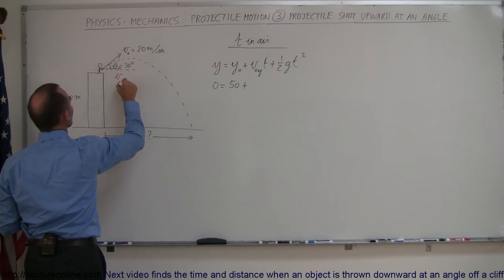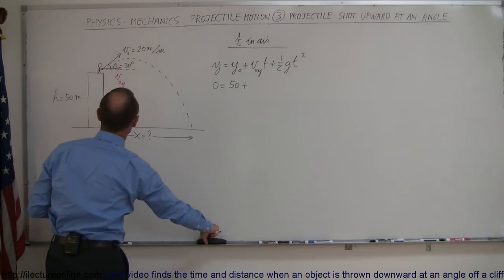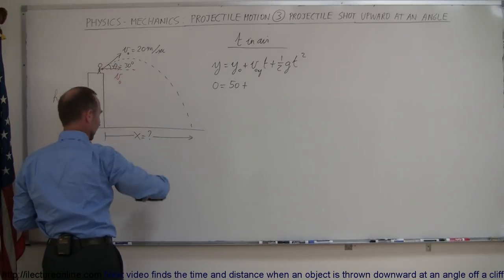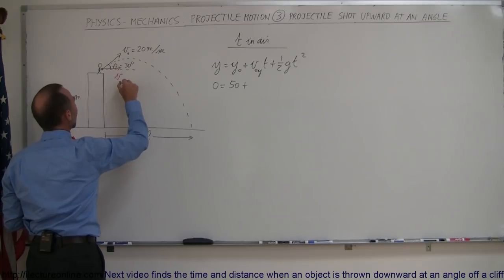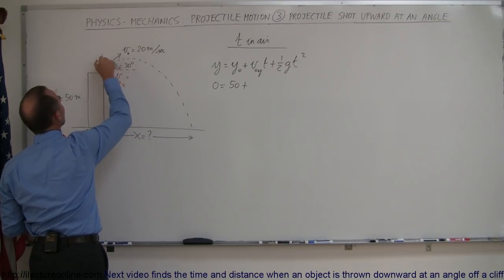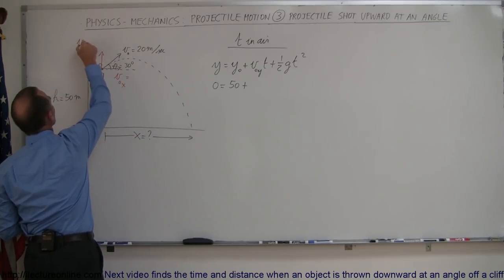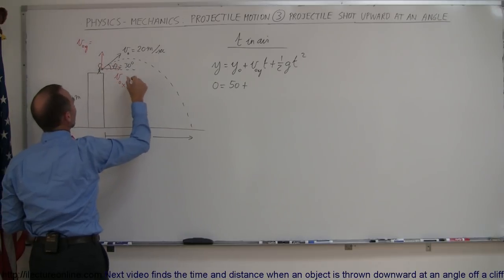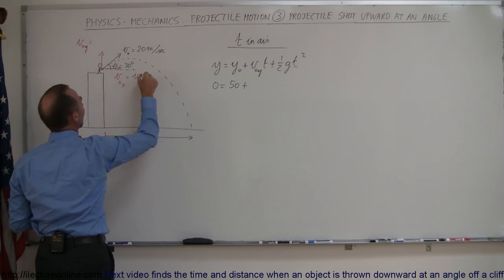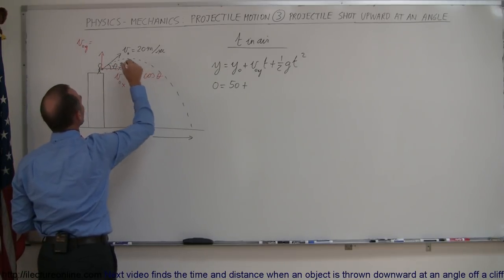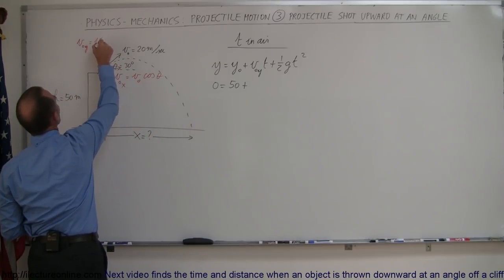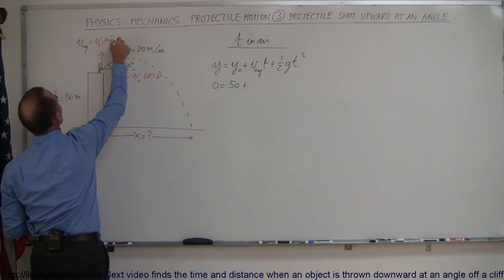So we need to find the initial velocity in the x direction and we need to find the initial velocity component in the y direction. Of course in the x direction it will be the initial velocity times the cosine of the angle theta and here this will be initial velocity times the sine of the angle theta.